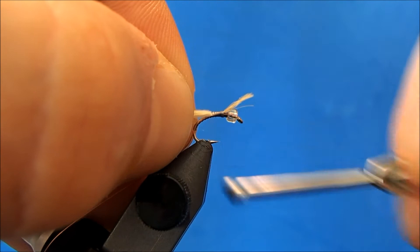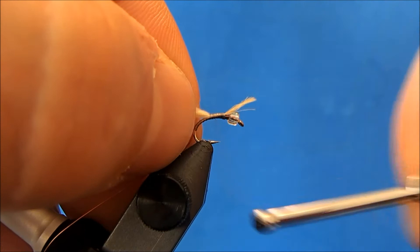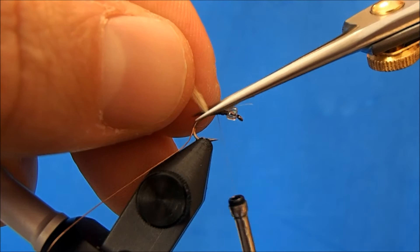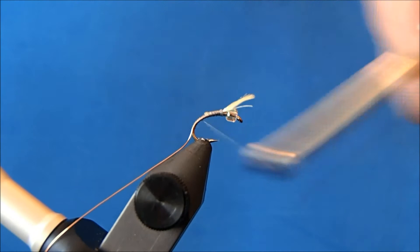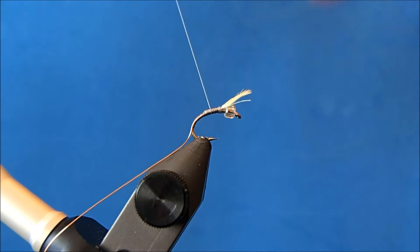Don't worry that it's leaning forward now. We're going to dub in front and behind that and stand it up. So now I'm tying in some of those butt sections and I'll trim, and that'll help build out some of this taper so it's not all thread here.